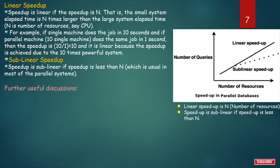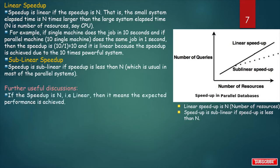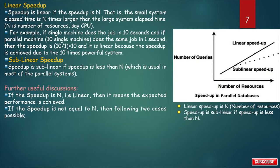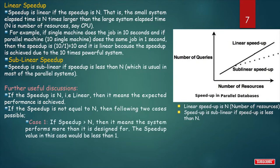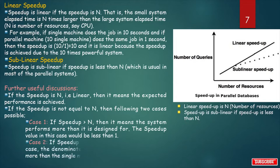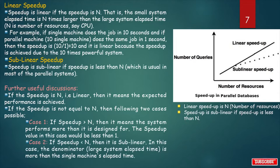Some useful discussions: if speedup equals n (linear), the expected performance is achieved. If speedup is not equal to n, two cases are possible. Case one: if speedup is greater than n, the system performs more than it is designed for. Case two: if speedup is less than n, it is sublinear — the large system elapsed time is more than the single machine's elapsed time.